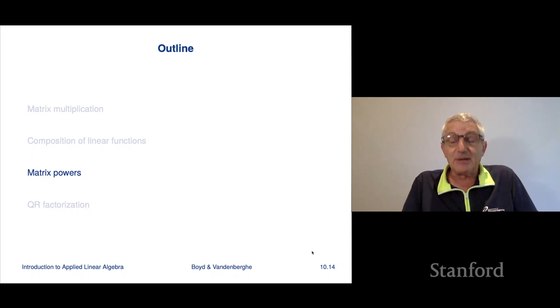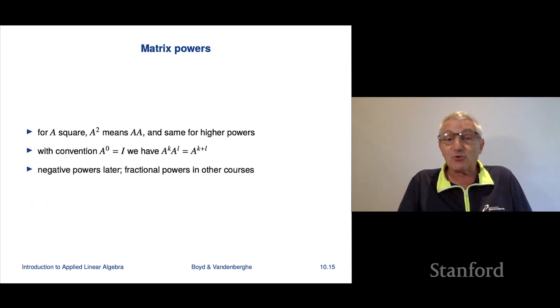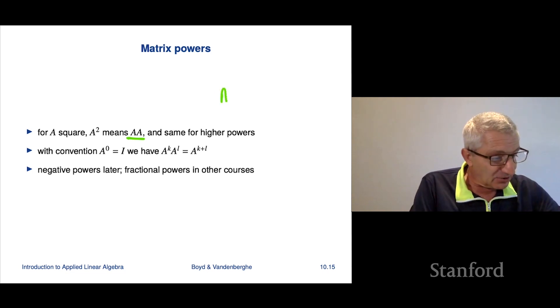Well, now we have the idea of multiplying matrices. We'll see now that if a matrix is square, you can multiply it by itself and that's going to give you the square matrix. And you can multiply it by itself again and you're going to get the cube of a matrix. So basically, you're going to have the idea of matrix powers. Let's take a look at that now. So of course, it only makes sense if A is square. Otherwise you can't multiply A by itself or something like that. So if A is square, then A squared simply means AA, and the same for higher powers. So for example, A cubed is A times A times A. And as we know, it doesn't matter which order you multiply it in. So that would be denoted as A cubed.